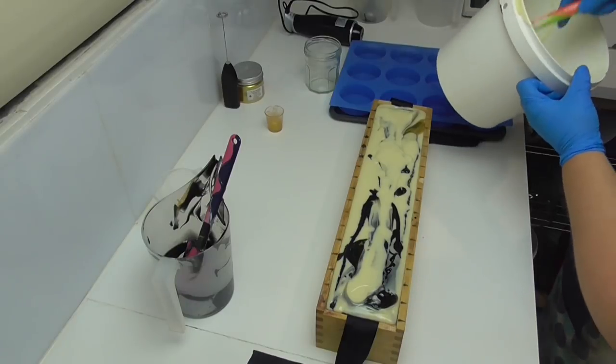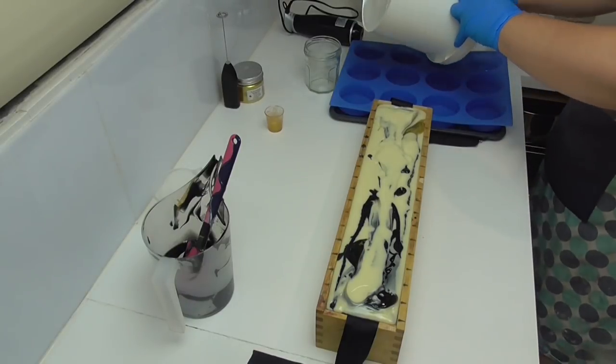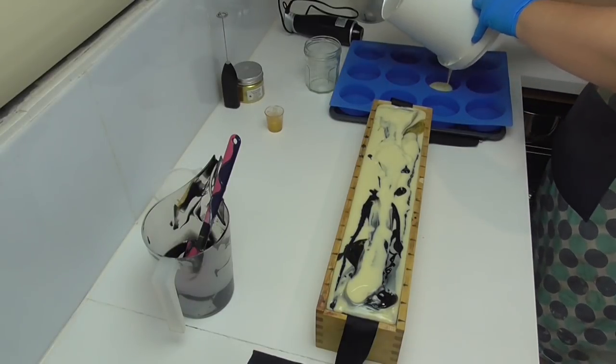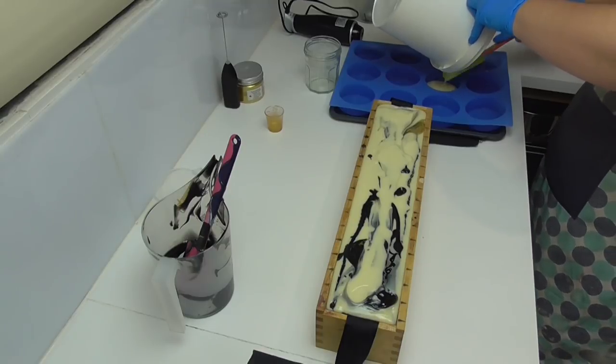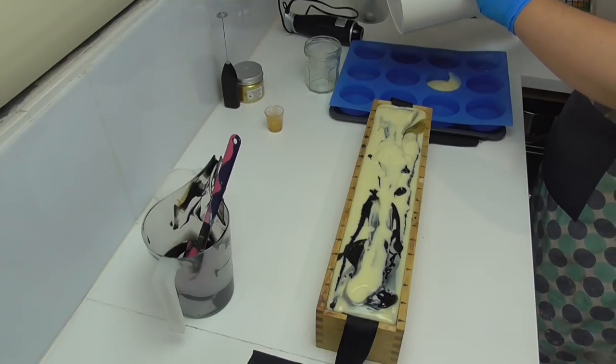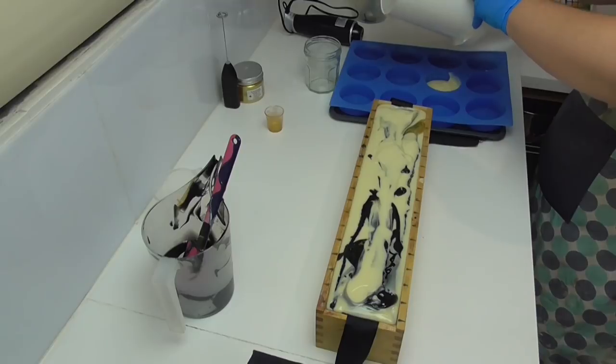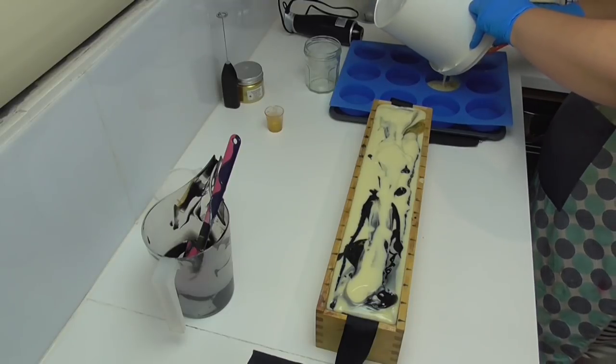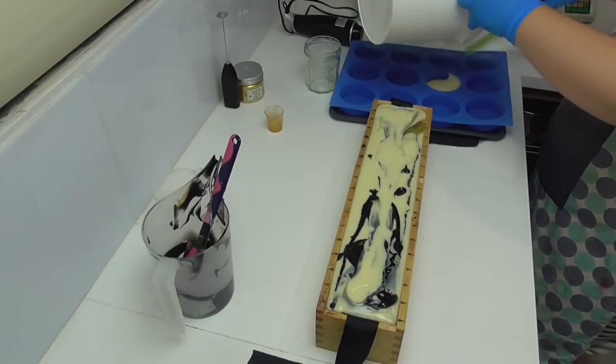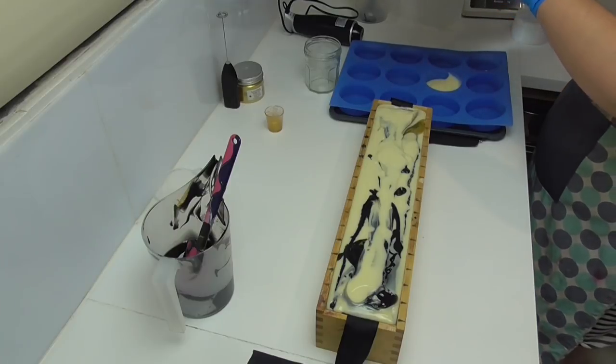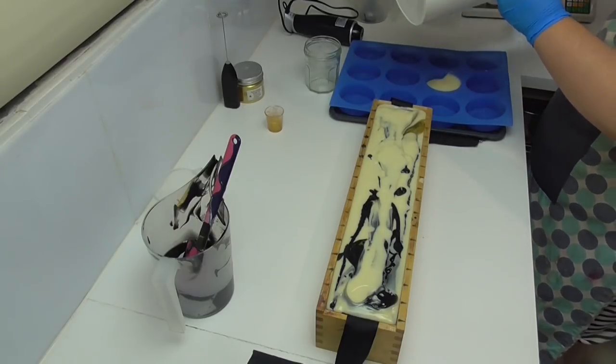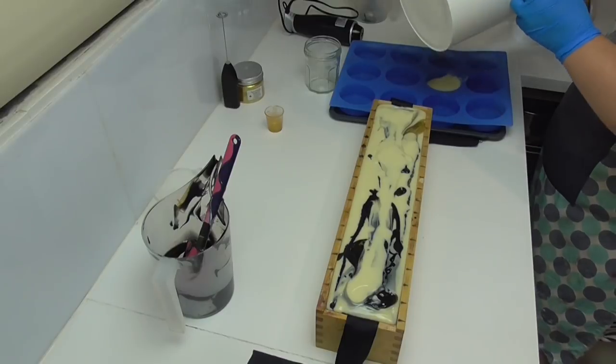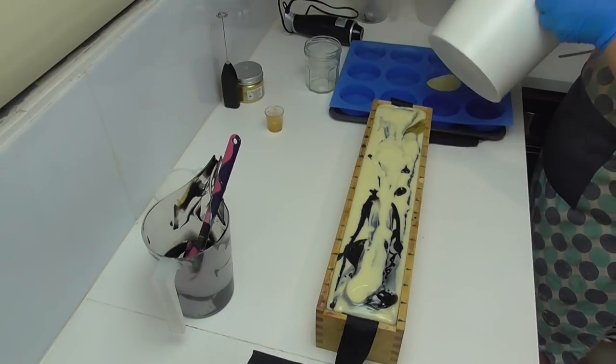All right so I have a fair bit of soap batter left in here so I'm just going to pour it into this extra soap mould and then this will either be done up as a separate little soap that will go in as a special or quite possibly because I really like this smell, this one will be for me.